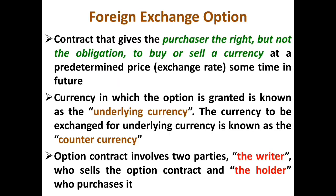Shifting our focus to the last market in this session: foreign exchange options. A foreign exchange option is a contract that gives the purchaser the right but not the obligation to buy or sell a currency at a predetermined price or exchange rate at some specified date in the future. Like a forward contract, foreign exchange options also involve an exchange of currencies at a specified future date at a predetermined price and amount. The currency in which the option is granted is known as the underlying currency.